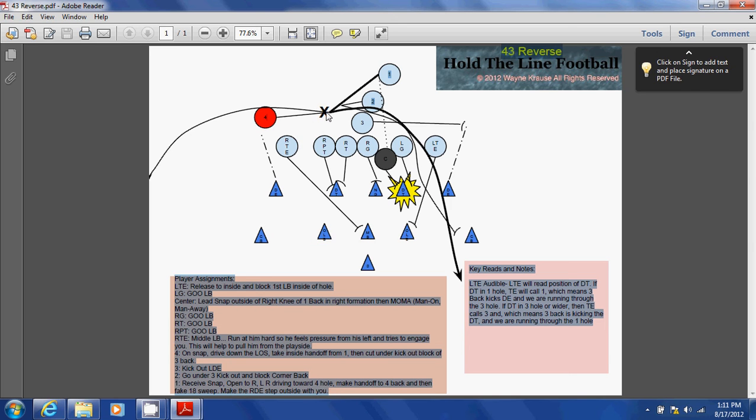The four back will then take it running to the opposite side of the formation and run through the three hole underneath the kickout block of the three back over here to the weak side of the formation.